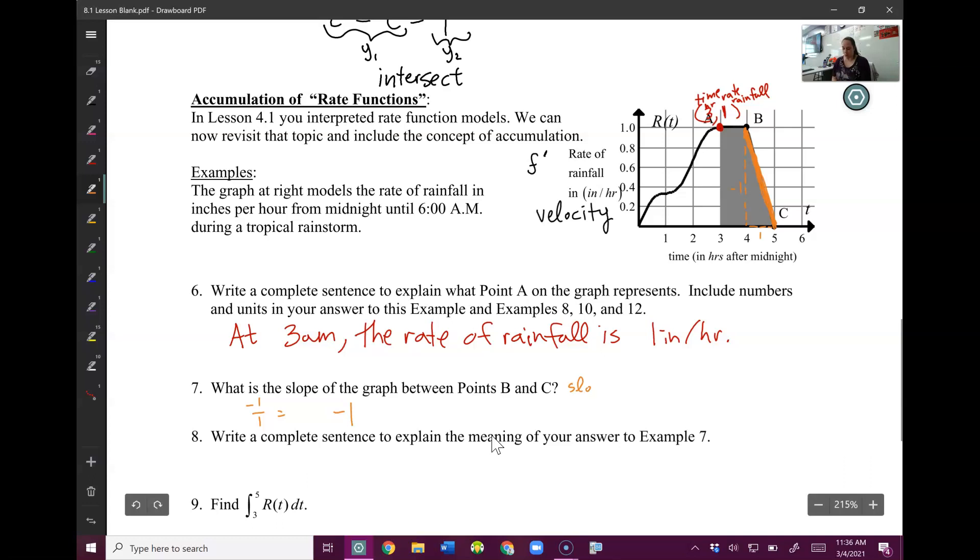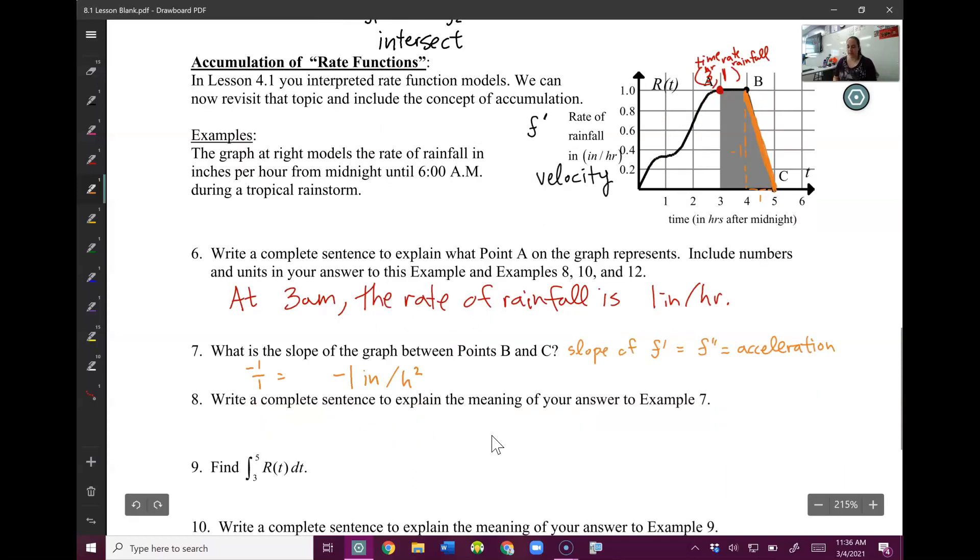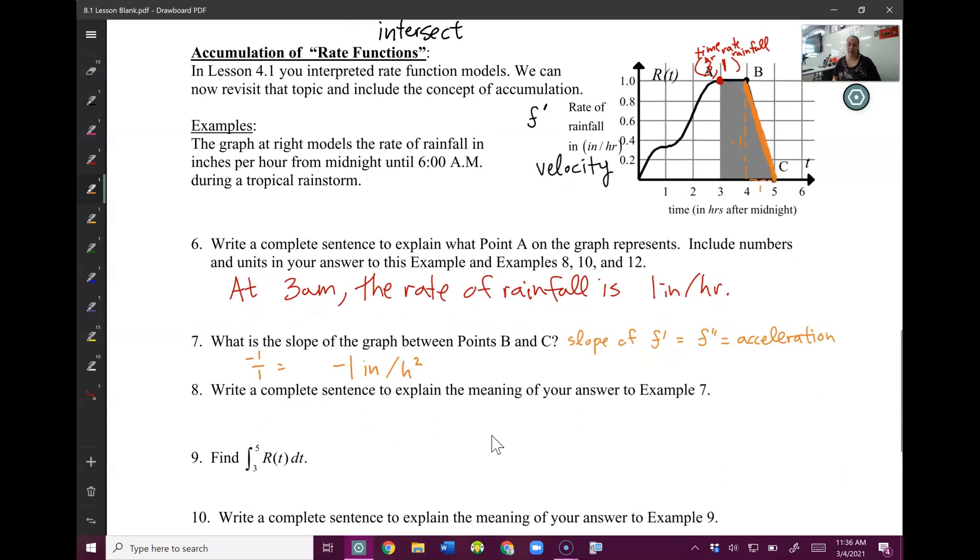This is slope of f prime, which is really the second derivative. If it's the slope of the first derivative, that's the derivative of the first derivative, which is the second derivative, or acceleration. So our units for this one is going to be negative 1 inches per hour per hour, or per hour squared.